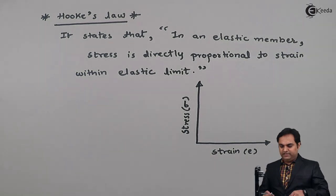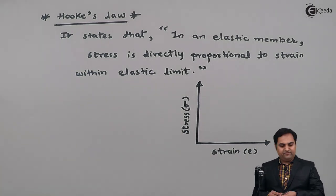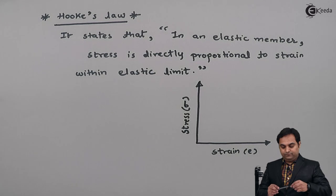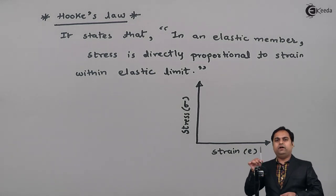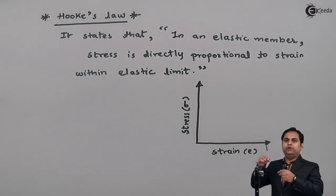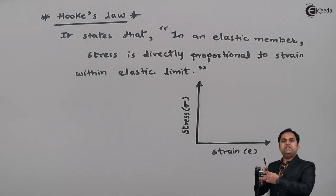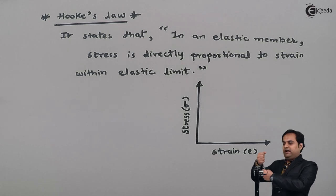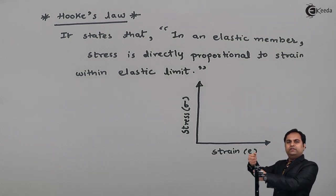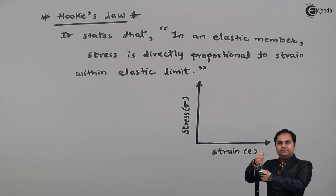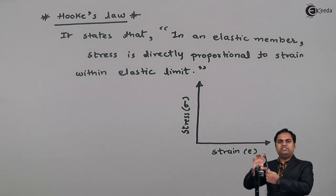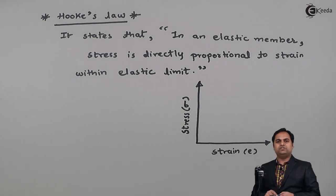The elastic limit means that if we have a member — say a rod — and I'm pulling this rod, when the material is elastic, then at the point of application when the load is applied, the shape of the rod will change. When the load is removed, it will regain its original shape.